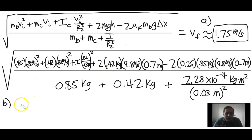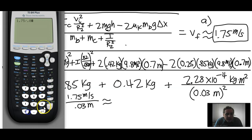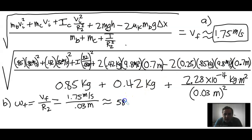For Part B, the final angular speed of the pulley: recall ω_f = v_f / R2 = 1.75 m/s ÷ 0.03 m ≈ 58.3 radians per second. All values are to three significant digits.